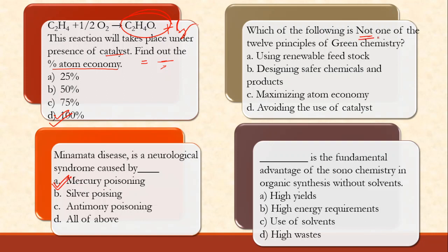Minamata disease is a neurological syndrome caused by mercury poisoning — specifically methyl mercury. Which of the following is not one of the 12 principles of green chemistry? Using renewable feedstock — yes, that's principle 7. Design safer chemicals and products — yes, principle 4. Maximizing atom economy — yes, principle 2. Avoiding the use of catalysts — no, they say use catalysts, don't avoid them. So this is not in the 12 principles.